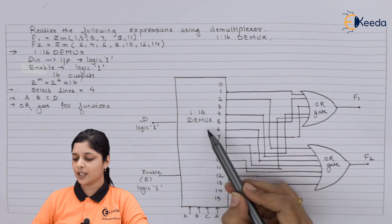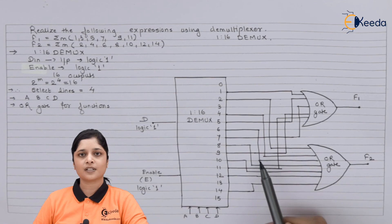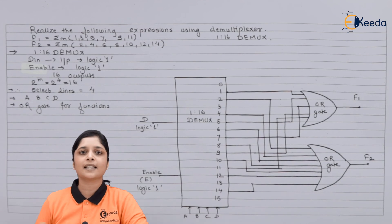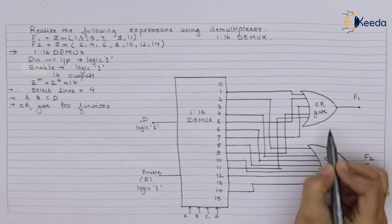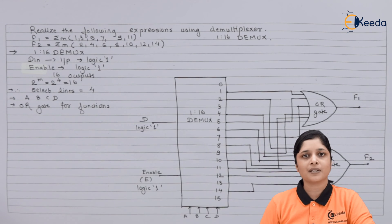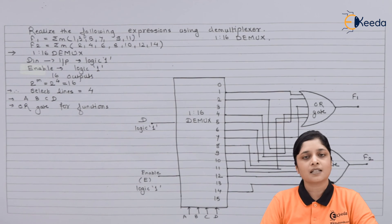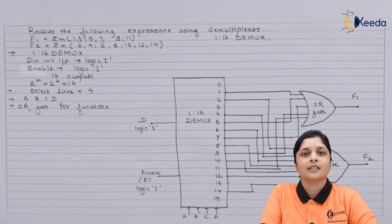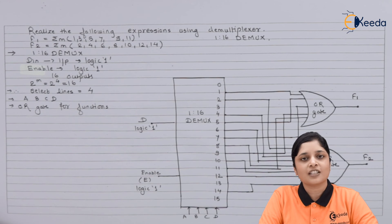Now if you see here we have mentioned name 1 input, 16 output, 4 select lines, and enable terminal always connected to logic 1. And OR gate we have designed. This is all about the numerical based on the demultiplexer consisting of 2 functions. Thank you for watching this video. Stay tuned with Ikeda and subscribe to Ikeda.